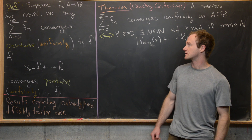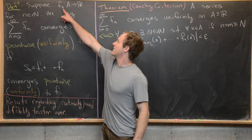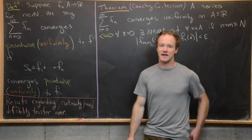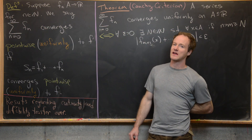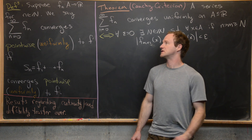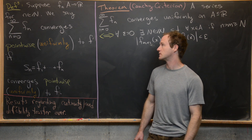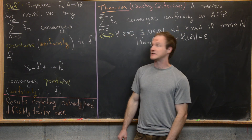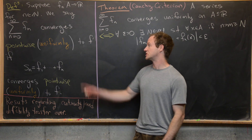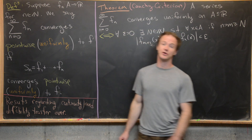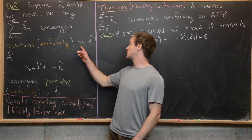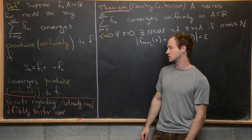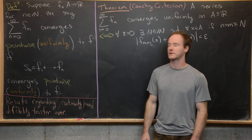Let's look at the definition first. Suppose that f_n is a function from A to R, and this is true for all natural numbers n. That gives us an infinite family of functions from A to R — f1, f2, f3, and so on. We say the series, the sum as n goes from zero to infinity of f_n, converges pointwise or uniformly to a function f if the sequence of partial sums converges pointwise or uniformly to f.